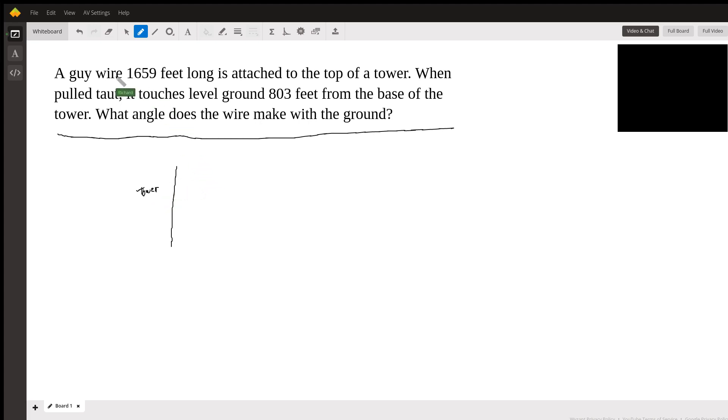And a wire is attached to the top of the tower and then it's stretched all the way down to the ground. So you can see we're forming a right triangle here.